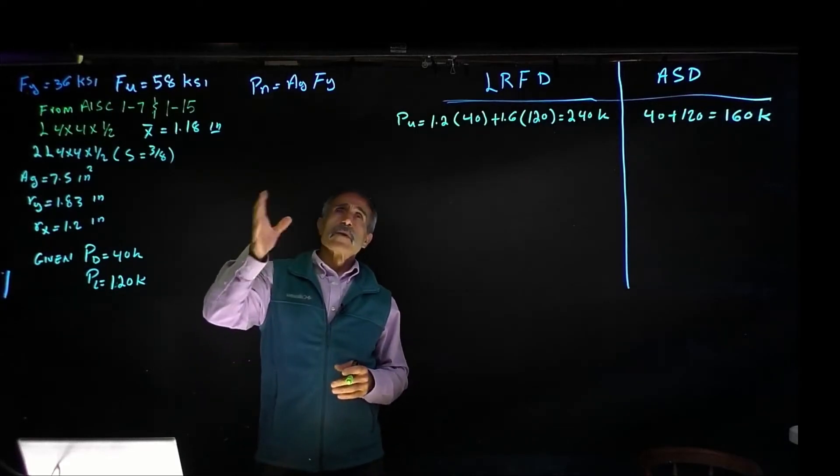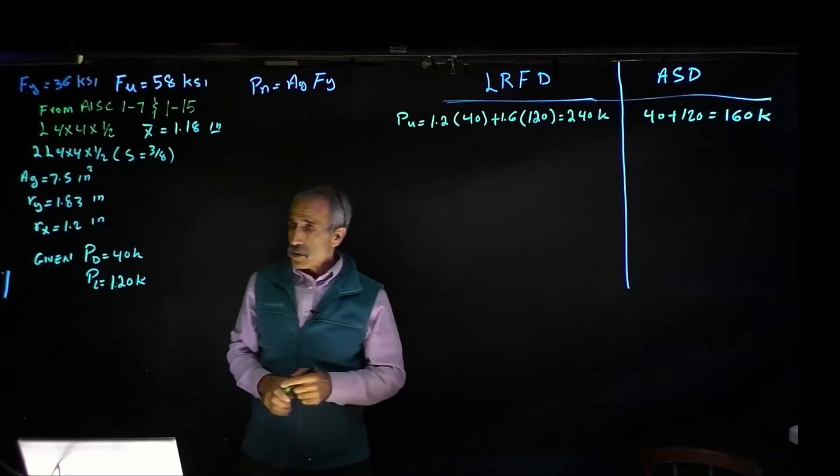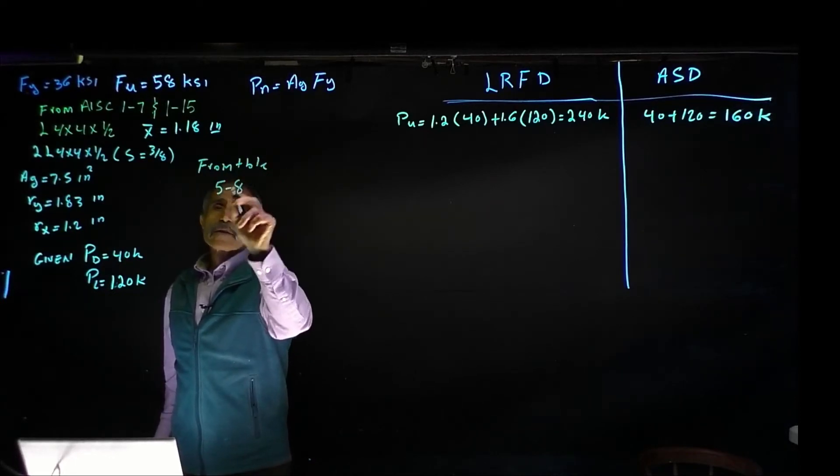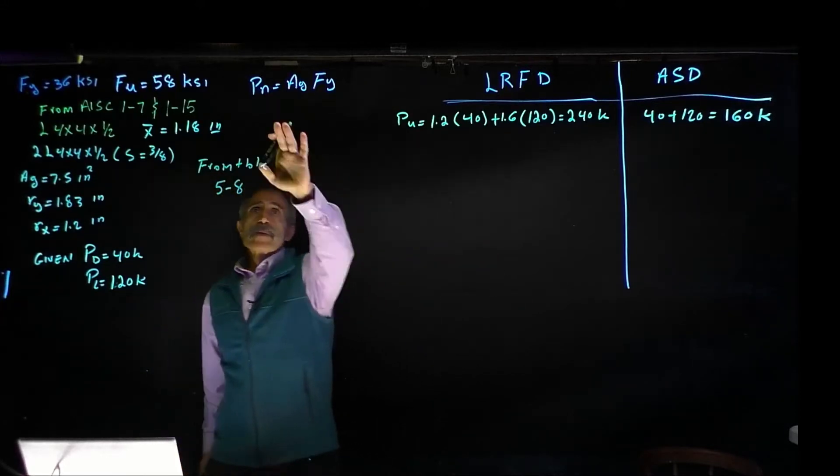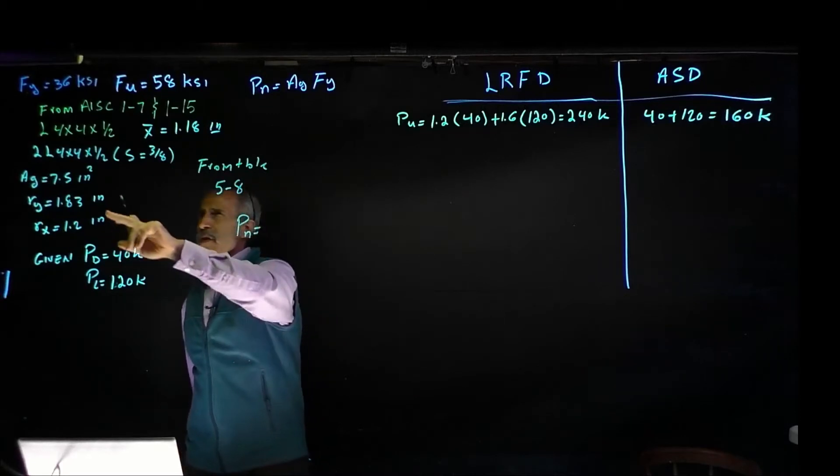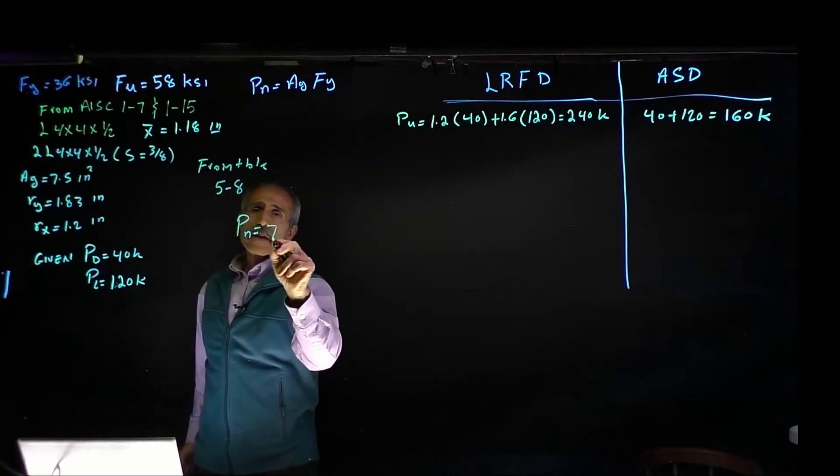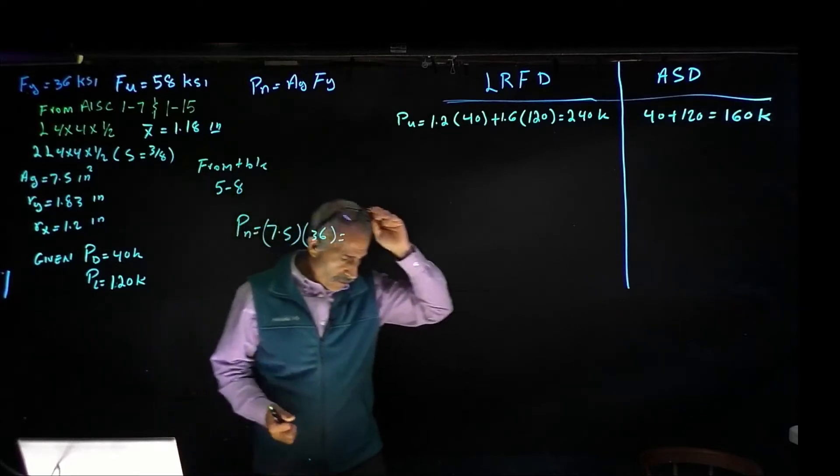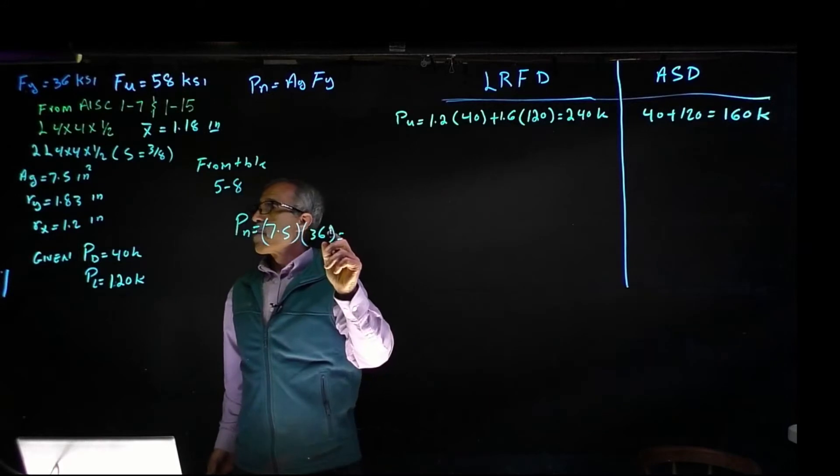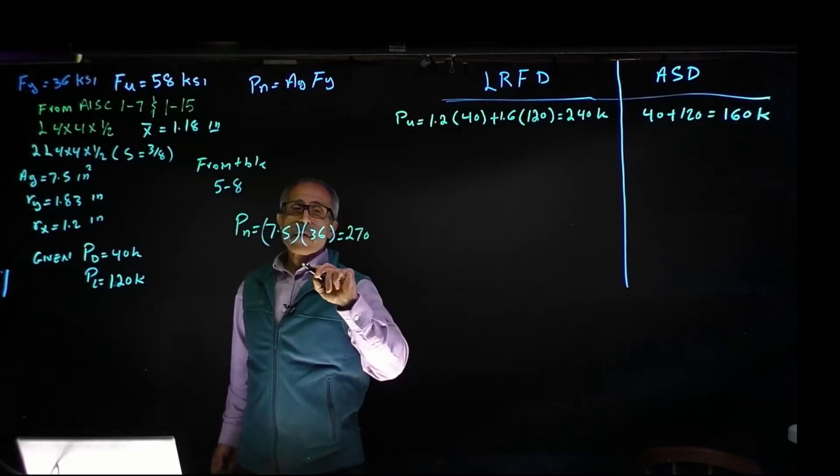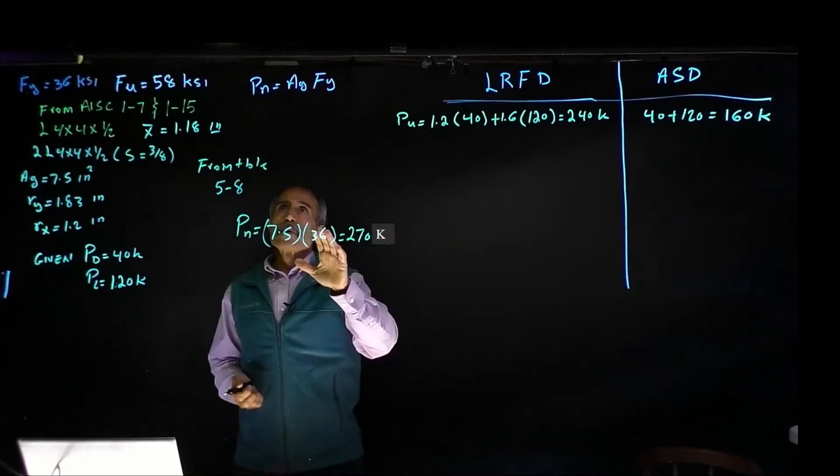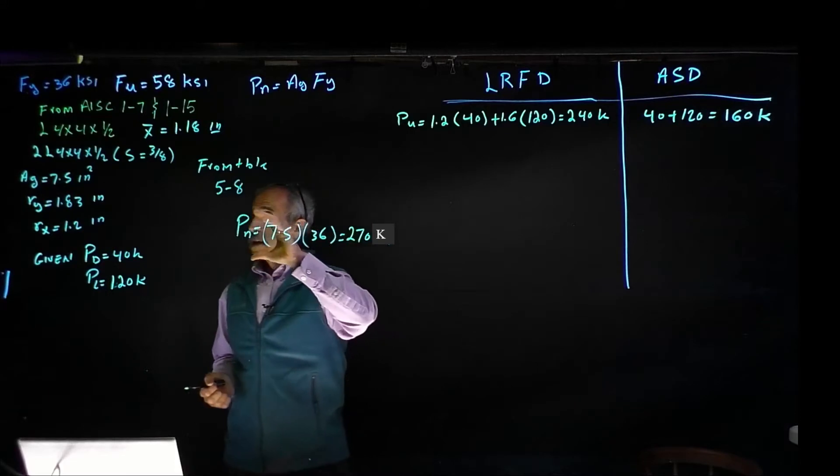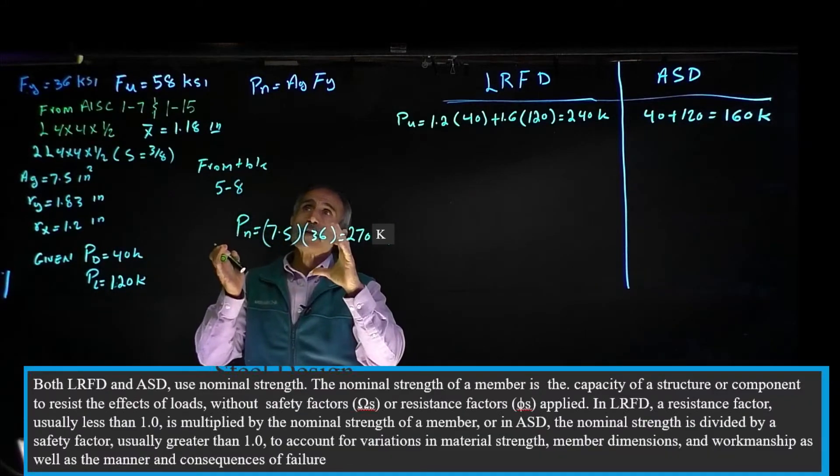Next we'll calculate nominal strength. We can calculate it using the equation or simply go to table 5a. PN is basically AG times FY, which is 7.5 times 36, and you end up with 270 kips. This is the nominal strength, the load capacity that the double angle can take without factor of safety.